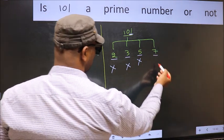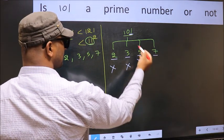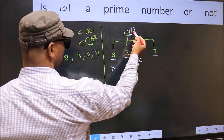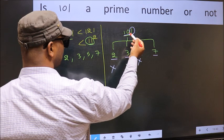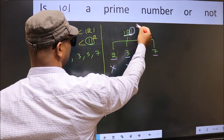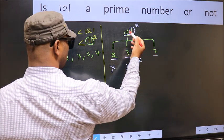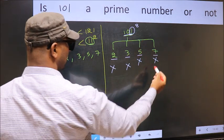Next, number 7. To check divisibility by 7, for that you double this last digit. 1 into 2, 2. Subtract from this. 10 minus 2, we get 8. 8 is not divisible by 7. So this number also not divisible by 7.